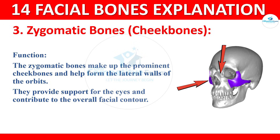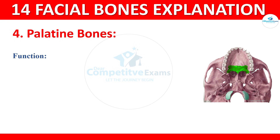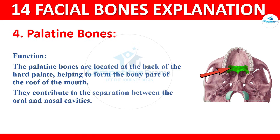The fourth type of bone is palatine bones. Palatine bones are located at the back of the hard palate and help to form the bony part of the roof of the mouth. They contribute to the separation between the oral and nasal cavities.